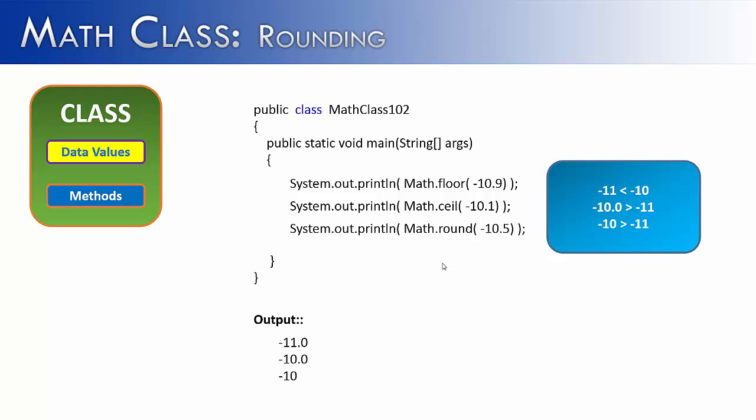And negative 11 is less than negative 10. So when you say floor, you wouldn't go to negative 10.0, you would go to negative 11 because that is the floor. That is the lowest.